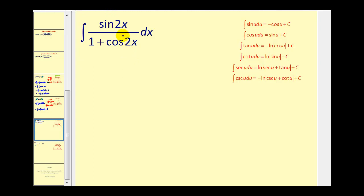So we're going to leave this in its current form and try to perform a u substitution. If we let u equal the denominator one plus cosine two x, let's see what differential u would be. Differential u would be the derivative of one, that's going to be zero, and the derivative of cosine two x using the chain rule would be negative sine two x times two dx. So differential u would be equal to negative two sine two x dx.